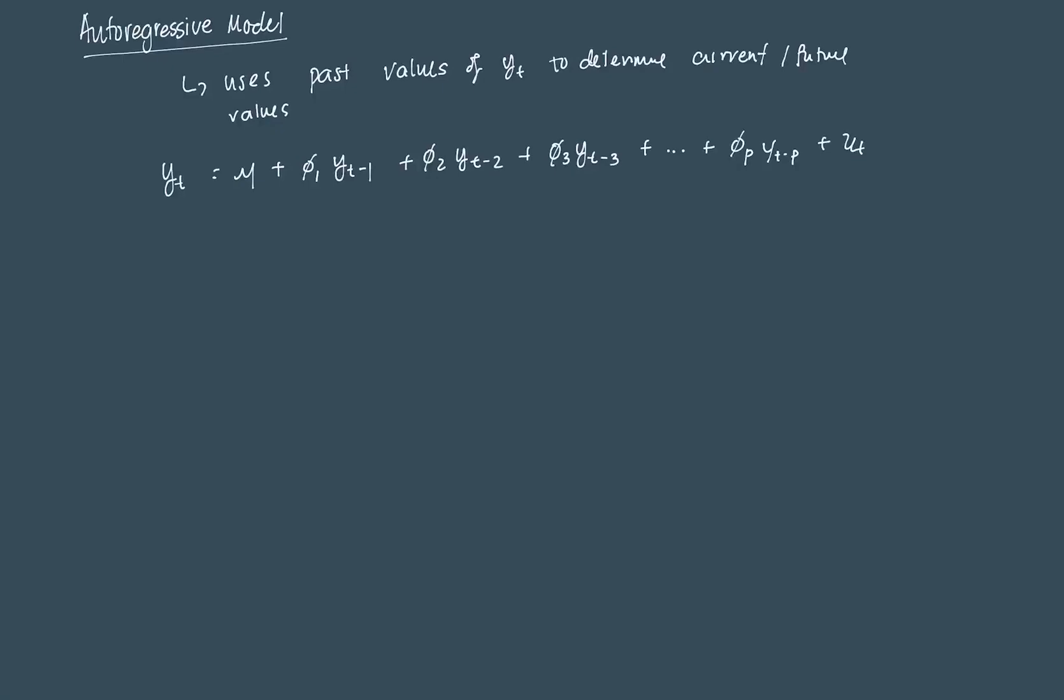In most cases, we'll assume that u_t follows a typical white noise process. Again, like the moving average model, we can write this form number 1 in sigma notation as in form number 2 here as y_t equal to mu plus sum i equal to 1 until p.